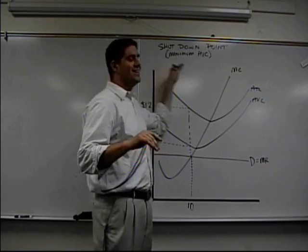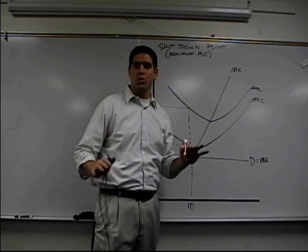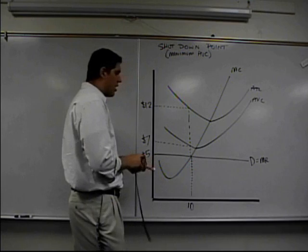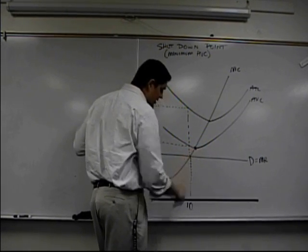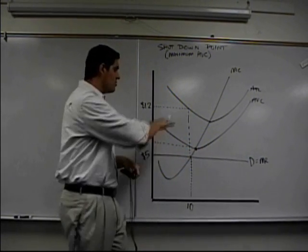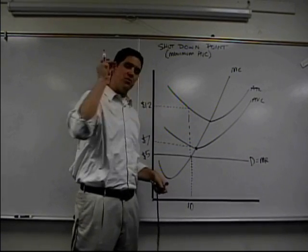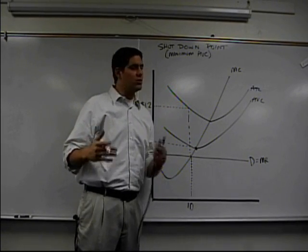We're going to talk about something called the shutdown point or the shutdown rule. The shutdown rule, and your teachers are going to explain it to you, is right here. The shutdown point is right there. When the price falls below AVC, the firm should shut down. The problem is most teachers explain it and say, hey, just trust me.